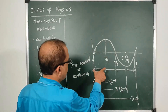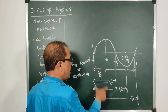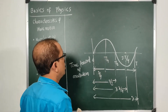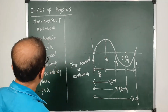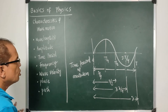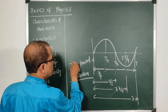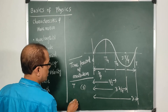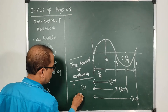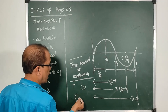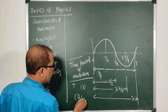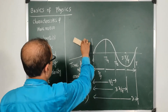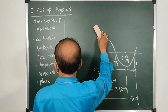So wavelength synchronizes with time period. The time period T is measured in seconds, and its dimension is [M⁰ L⁰ T¹].